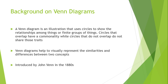A Venn diagram is an illustration that uses circles to show the relationships among things or finite groups of things. Circles that overlap have a commonality, while circles that do not overlap do not share those traits. Venn diagrams help to visually represent the similarities and differences between two concepts. Venn diagrams were introduced by John Venn in the 1880s.